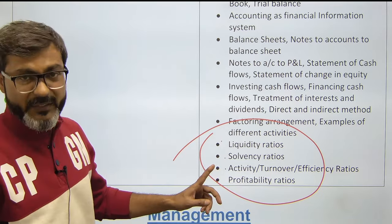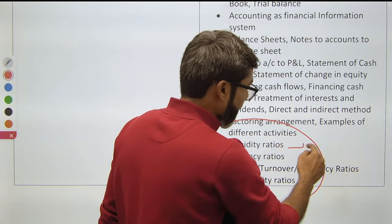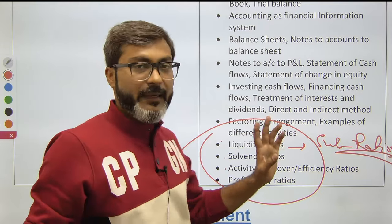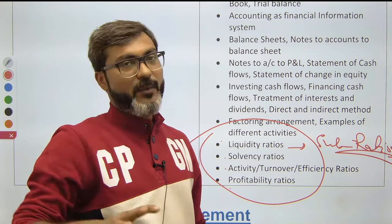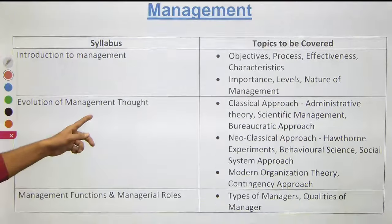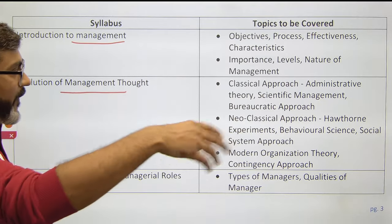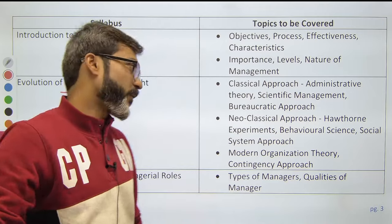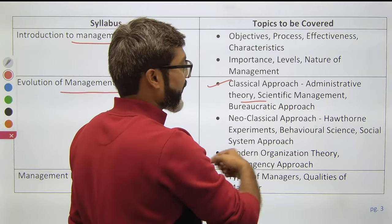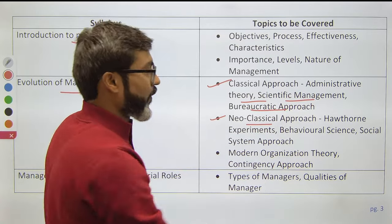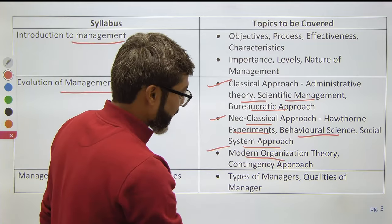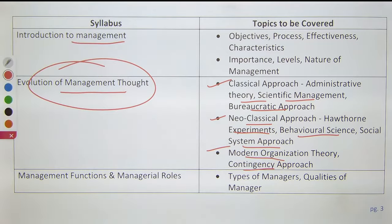The ratios you need to study are: liquidity ratios, solvency ratios, activity/turnover/efficiency ratios, and profitability ratios. That completes the Finance syllabus decoding. Moving to Management — the introduction covers objectives, process, and importance of management. For the evolution of management thought, cover: classical approach, administrative theory, scientific management, bureaucratic approach, behavioral science, social system approach, modern organization theory, and contingency approach.